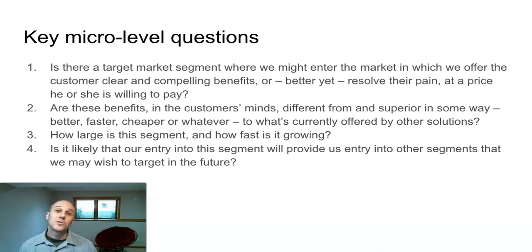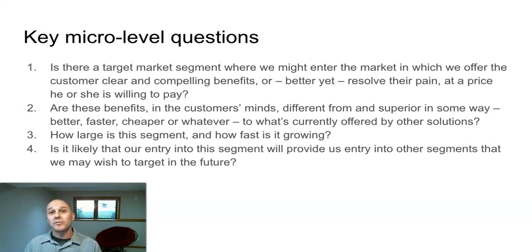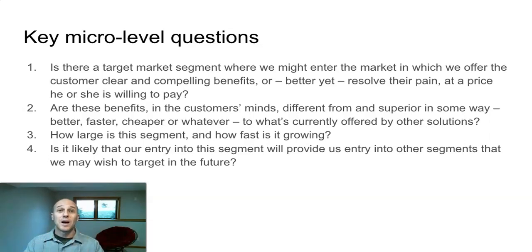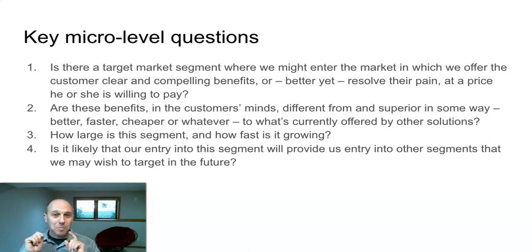The New Business Road Test poses a series of micro-level questions. We're down at the ground level, talking about customers and segments. Those questions are: Is there a target segment where you can offer the customer a clear and compelling benefit, or resolve their pain, at a price they're willing to pay? Are these benefits — in the customer's mind — different from, or superior to, whatever's available now? Notice that phrasing: in the customer's mind. You might think your technology is ten times better than what's out there, but that doesn't matter. The only thing that matters is whether your customers believe it. All of this has to exist in the minds of the customer.